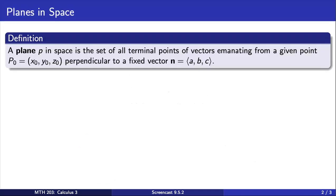Jumping right in, a plane P in space is the set of all terminal points of vectors emanating from a given point P0, perpendicular to a fixed vector N.